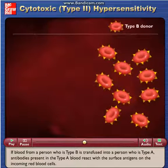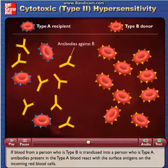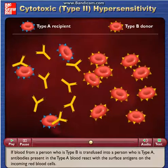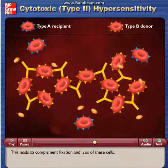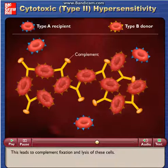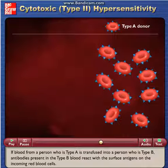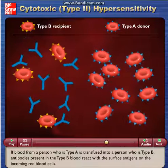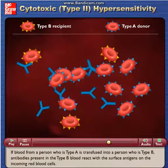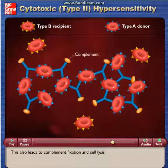If blood from a person who is type B is transfused into a person who is type A, antibodies present in the type A blood react with the surface antigens on the incoming red blood cells. If blood from a person who is type A is transfused into a person who is type B, antibodies present in the type B blood react with the surface antigens on the incoming red blood cells. This also leads to complement fixation and cell lysis.